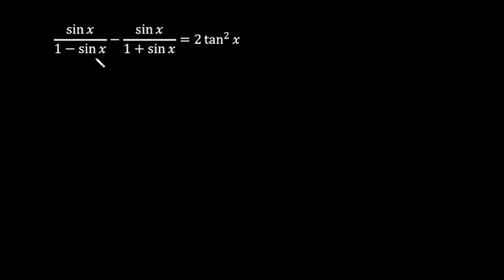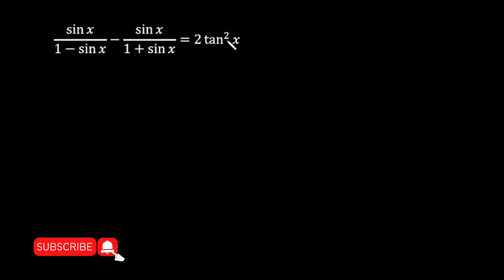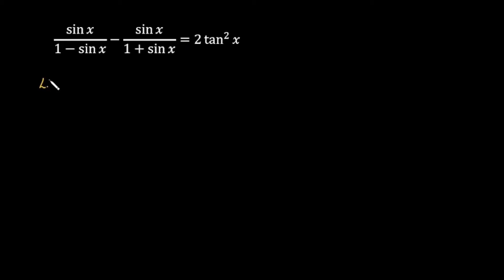Hello friends. In this lecture I am going to prove this given trigonometric identity: sin x over 1 minus sin x, minus sin x over 1 plus sin x, is equal to 2 tangent square x. So I have to prove the left hand side is equal to the right hand side. First of all I will take the left hand side of this identity.